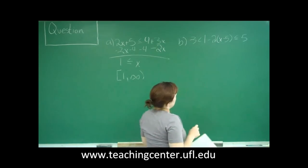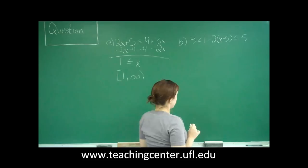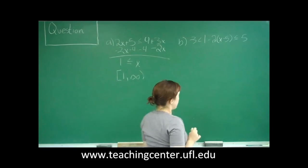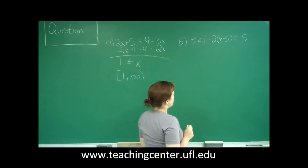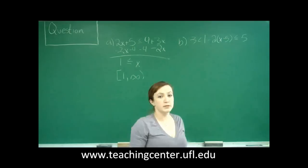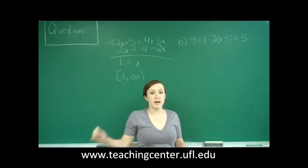Part B is a little more complicated. It says negative 3 is less than 1 minus 2 times the quantity x minus 5, which is less than or equal to 5. So what we're going to do is we're going to work from the center and remember what we do to one side, we have to do to every side.